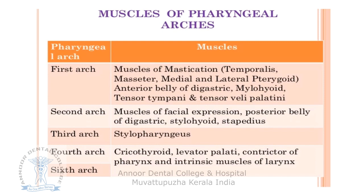Muscles derived from the first arch include the muscles of mastication: temporalis, medial pterygoid, masseter, lateral pterygoid, and anterior belly of digastric, as well as mylohyoid, tensor tympani, and tensor veli palatini. These are all derived from the first pharyngeal arch and are supplied by the mandibular nerve.